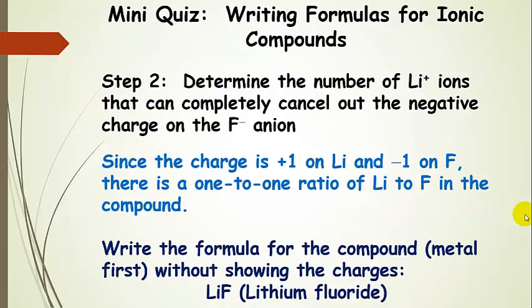Let's figure out how many lithium cations we need to cancel out a fluoride anion. It's easy to see: plus 1 on lithium, minus 1 on fluorine. If we add those two together, a 1 to 1 ratio of lithium to fluorine works. Not writing the charges — we write the metal first, then the non-metal. So we have lithium fluoride, written as LiF.